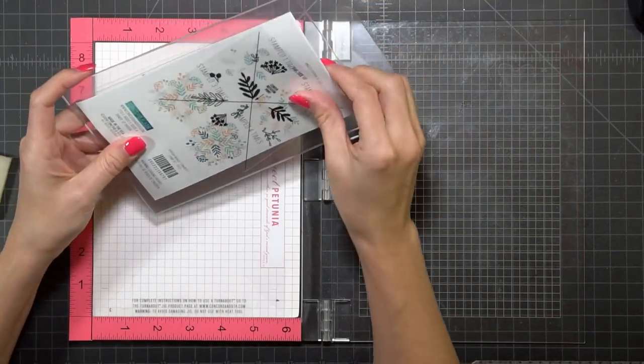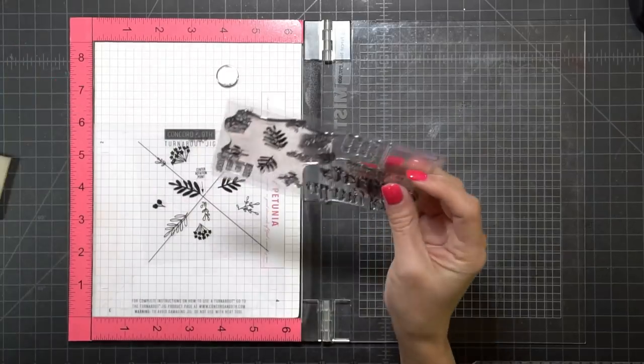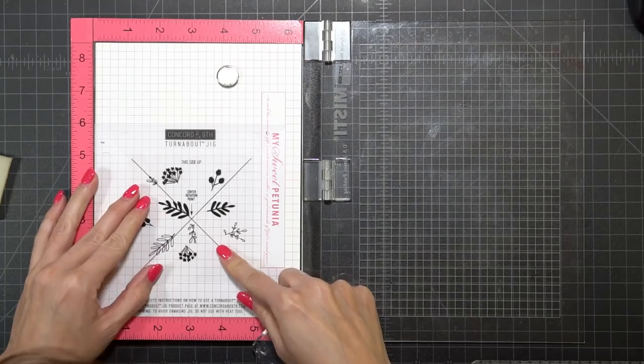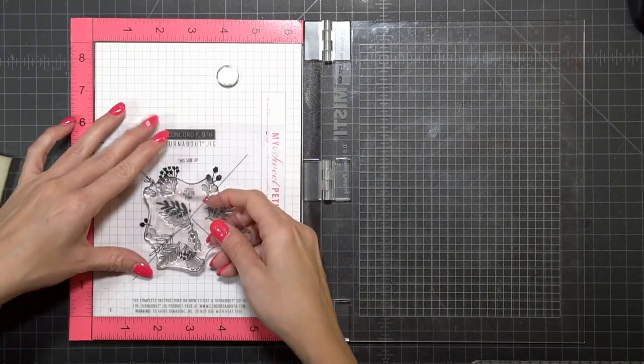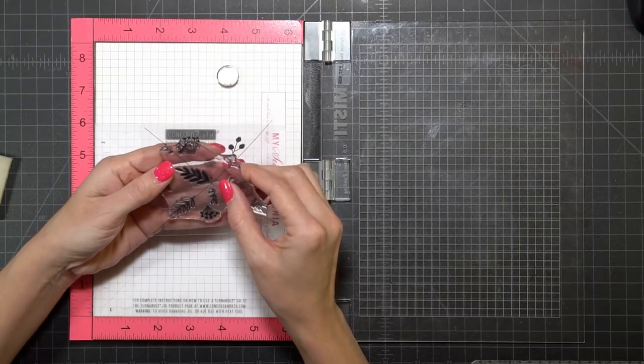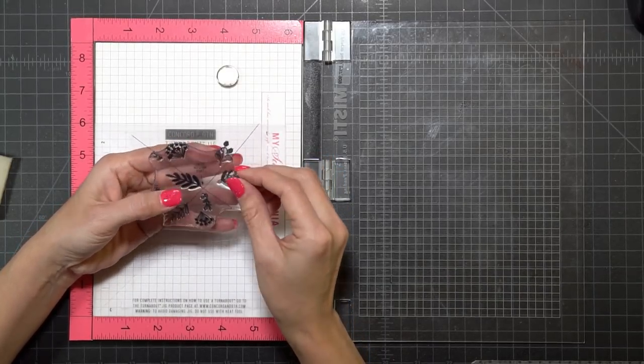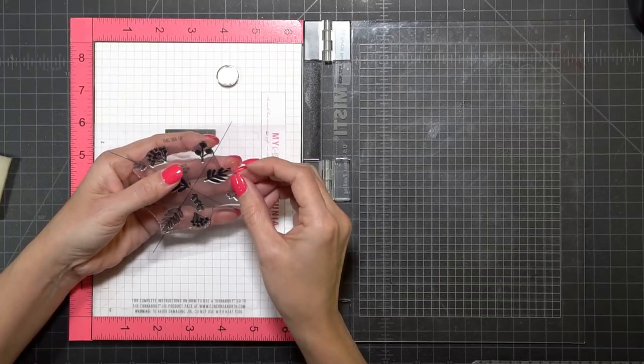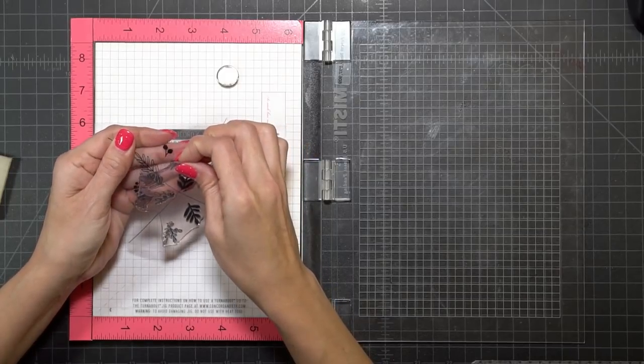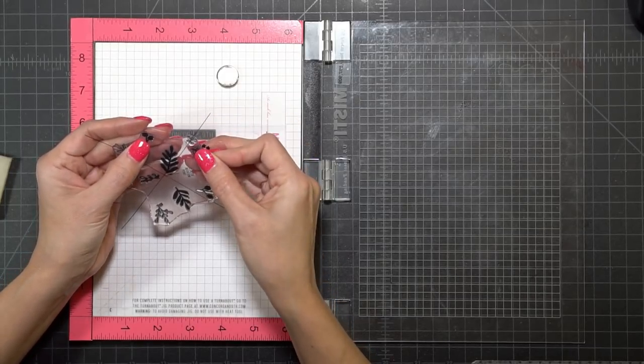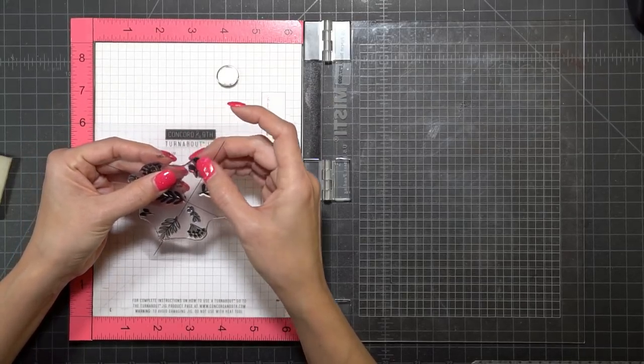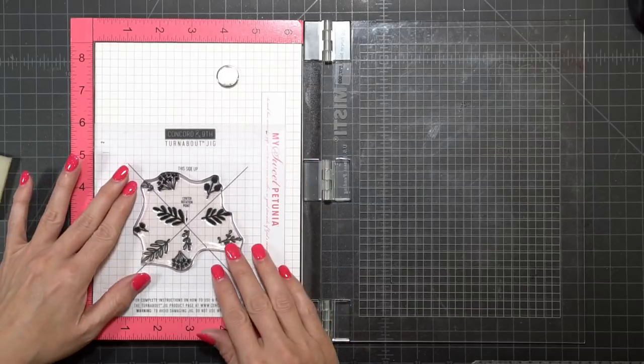In this kit you get a turnabout template and I'm going to show you how I put it to use. I've removed the stamp from the backer sheet and now I'm placing it onto the acetate that has the X on it. I'm matching up the pictures with the stamp, and because I've pulled the stamp off, sometimes it gets a little distorted and stretched out, so I'm careful to match up all of the little elements to get good alignment.